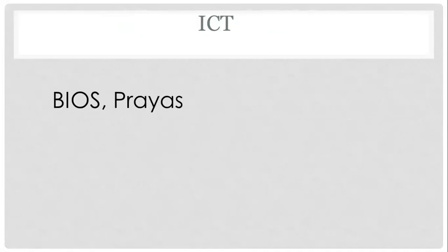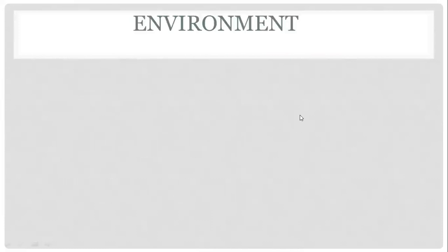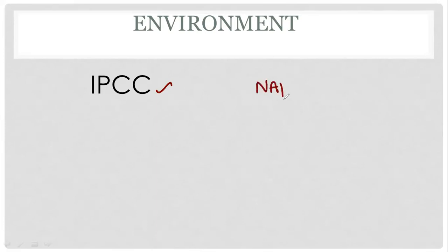Coming to ICT — we call it abbreviations and conversion system. Abbreviations and BIOS for abbreviations, and PRIOS is a question. Also, number system conversion — binary to decimal conversion. This is about ICT: conversions and abbreviations.